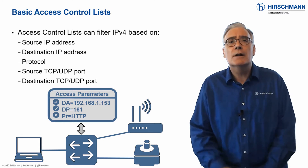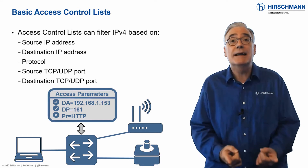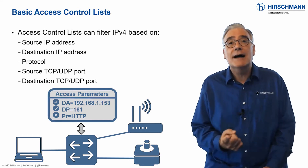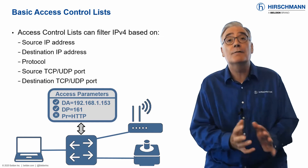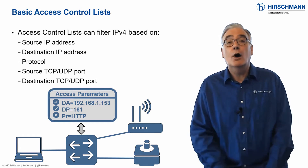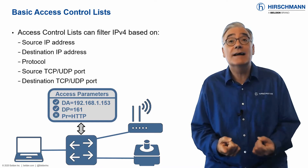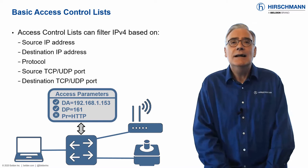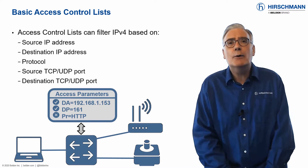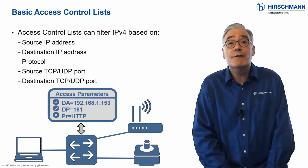For example, device A cannot communicate with device B, or device A cannot communicate with this group of devices, or device A can communicate with device B but only to send events. As you can see, even with only a few decision criteria, you can build up very flexible rules.